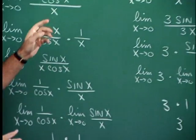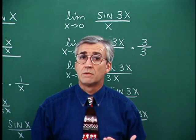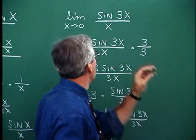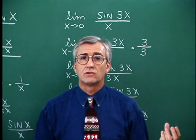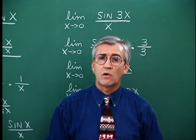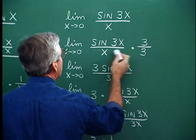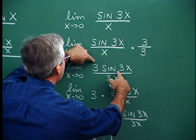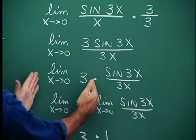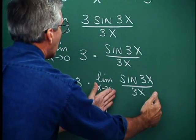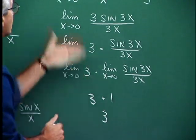Here's another one: the limit as x approaches 0 of sine 3x over x. This is not directly in the form where we can say the limit is 1 — we need manipulation. We multiply by 3 over 3 to introduce a 3 factor. Now we have 3 sine 3x over 3x in the numerator and denominator. Separate the 3: it's 3 times the form sine 3x over 3x that we're looking for. Apply the limit to each factor: the limit of the constant 3 is 3, and the limit of sine 3x over 3x is 1. So 3 times 1 equals 3.